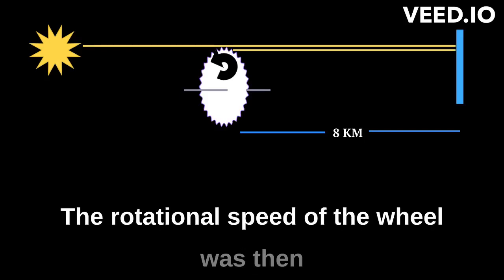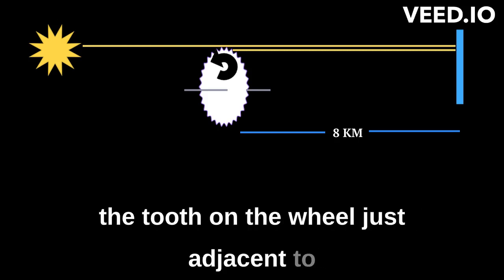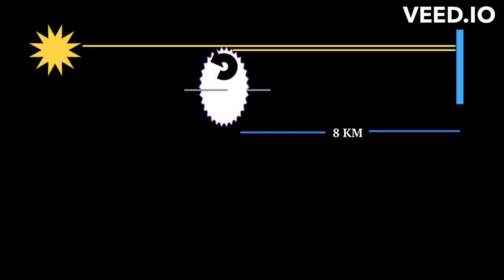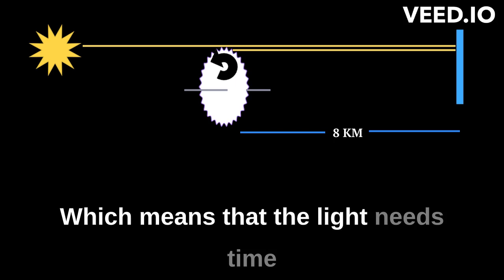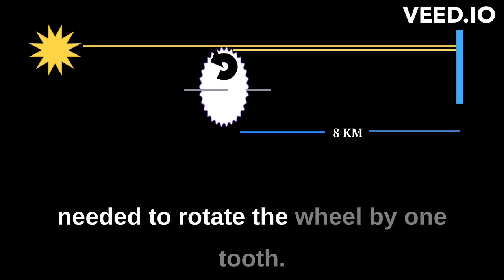The rotational speed of the wheel was then increased until the returning light was blocked by the tooth on the wheel just adjacent to the space through which it had passed. This means that the light needs time to travel 8 km twice, which equals the time needed to rotate the wheel by one tooth.